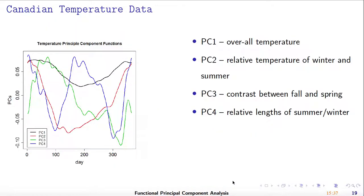Now let's go back to the Canadian weather data. This shows the FPC for the Canadian temperature data — the 35 temperature curves for 35 Canadian cities. The black curve is the first FPC, which is positive throughout the whole year, with a lower weight around summer and a higher weight in winter. So we can interpret the first FPC score as the weighted average of the temperature.